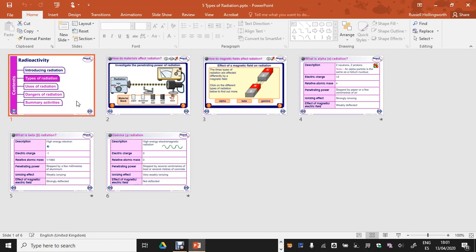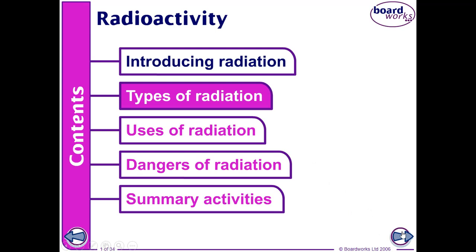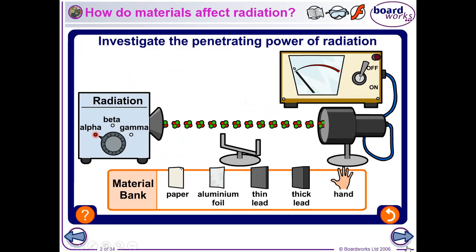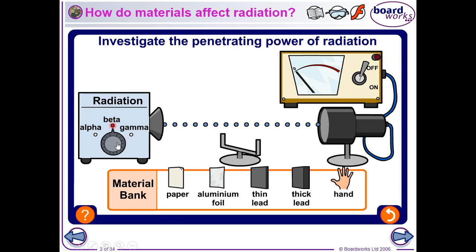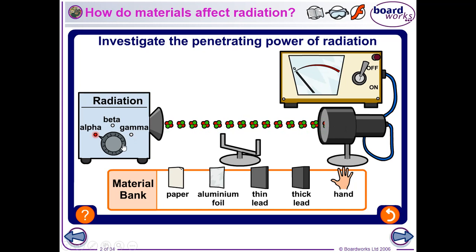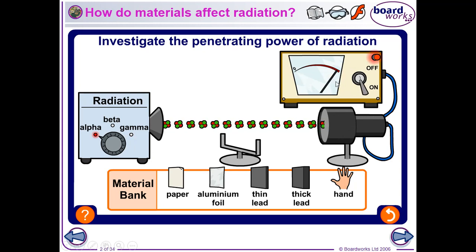We're going to look at the different types of radiation and their properties. You can download the PowerPoint and play with the simulator yourself, but here in the video we have an emitter of radiation — a source — and I can switch between alpha, beta, and gamma radiation. Beta particles are smaller, and gamma is a wave of electromagnetic radiation. This is our Geiger-Müller tube, which detects incoming radiation.